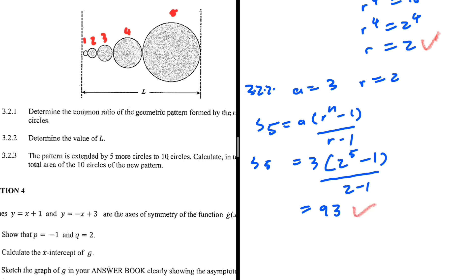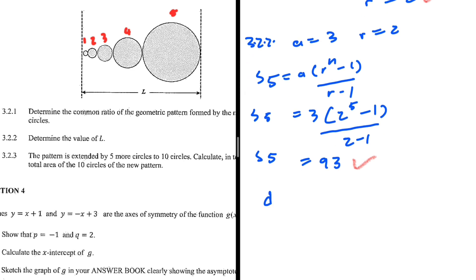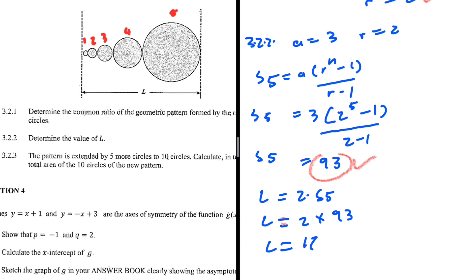This is the sum of the radii, but l is the sum of the diameters. So l equals 2 multiplied by S5, since diameter equals 2r. That gives l equals 2 multiplied by 93, which is 186. Therefore l equals 186 units.